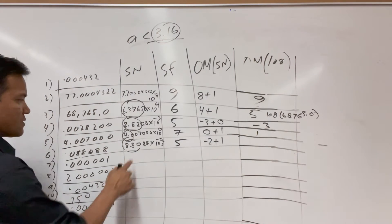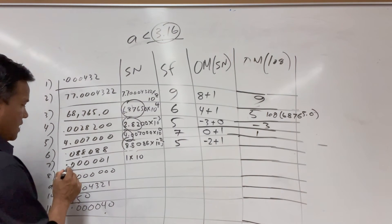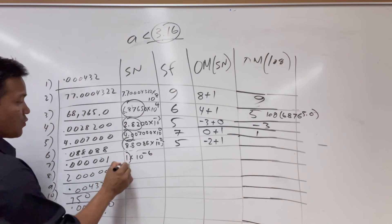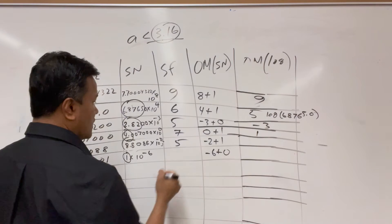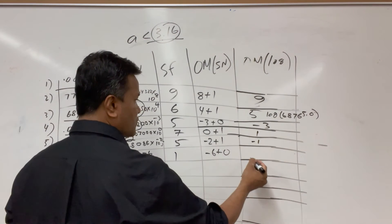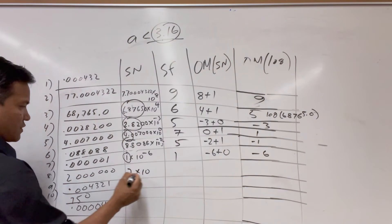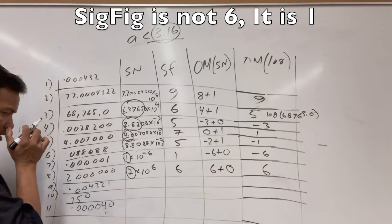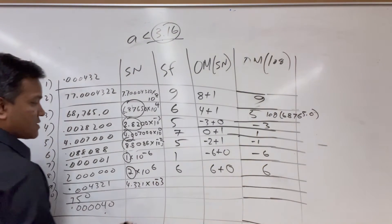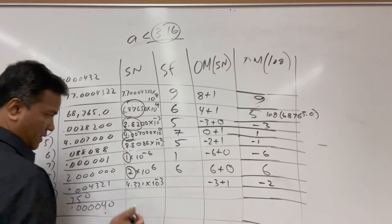For 1×10⁻⁶: significant figures is 1. 1 is less than 3.16, so order of magnitude is −6+0=−6. Log gives −6. For 2×10⁶: order of magnitude is 6+0=6, since 2 is less than 3.16. Log gives 6. For 4.321×10⁻³: 4 significant figures. Is 4.3 bigger than 3.16? Yes, so order of magnitude is −3+1=−2. Log rounds to −2.